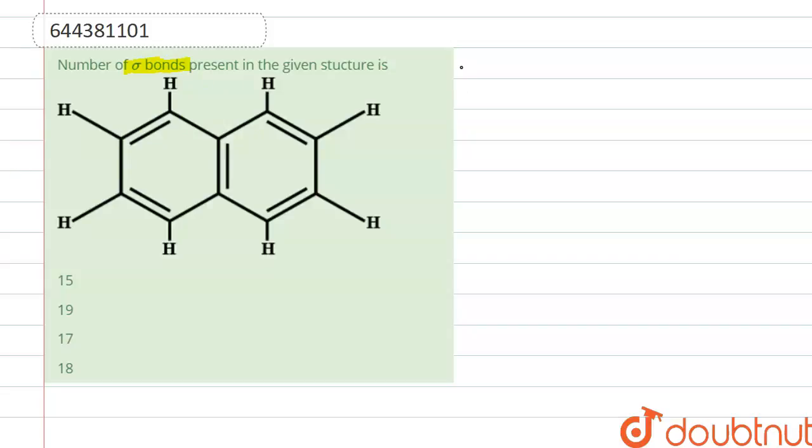So first we need to know the basic concept for calculating sigma bonds or pi bonds. So the basic concept is: if there is a double bond,